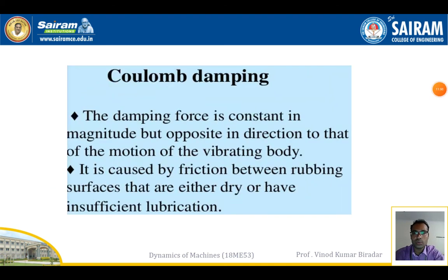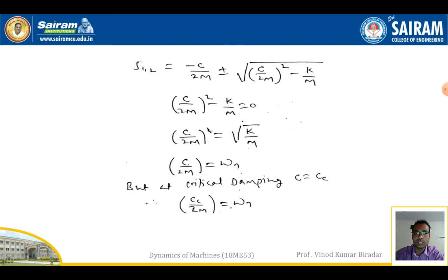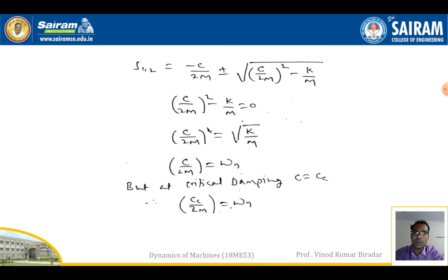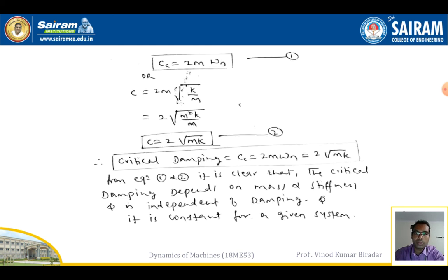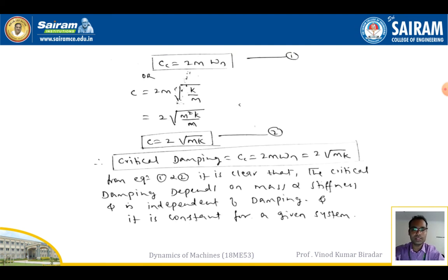To summarize the three key terms: first, ωd (damped natural frequency) = √(1 − ζ²)·ωn; second, Cc (critical damping coefficient) = 2m·ωn; third, damping factor ζ = c/Cc. The four types of damping are viscous damping, Coulomb damping, hysteresis or solid damping, and magnetic damping. These are essential for solving damping system problems. Thank you.